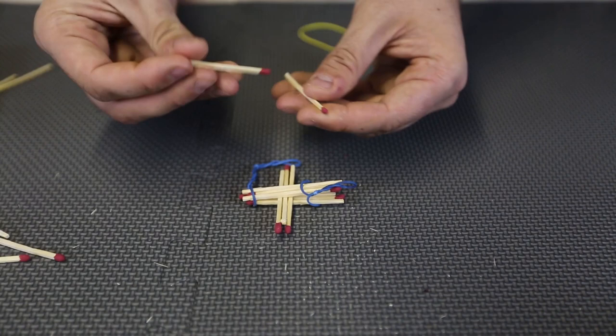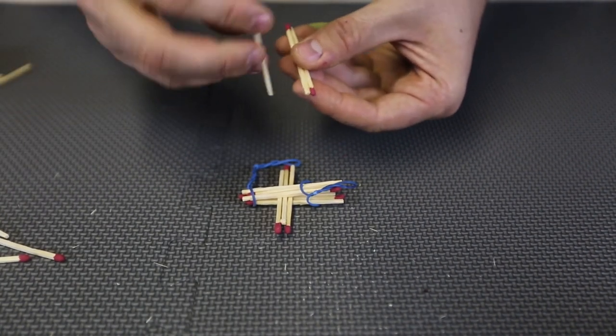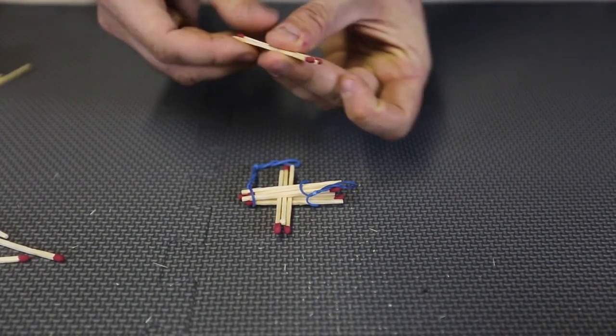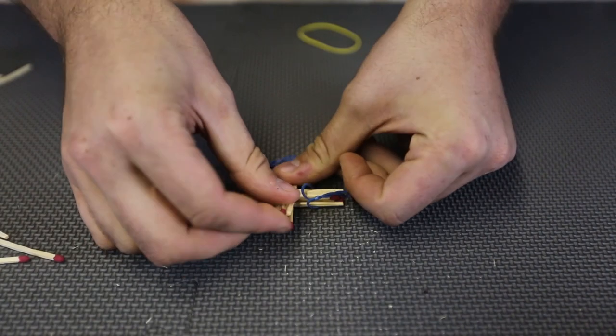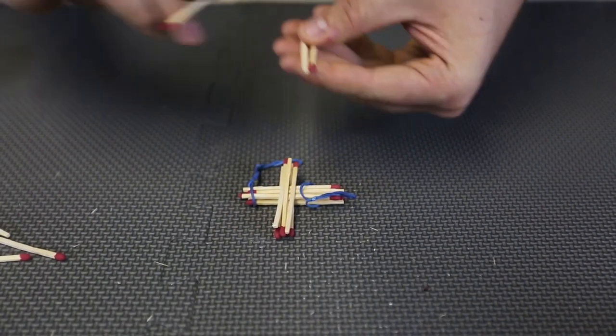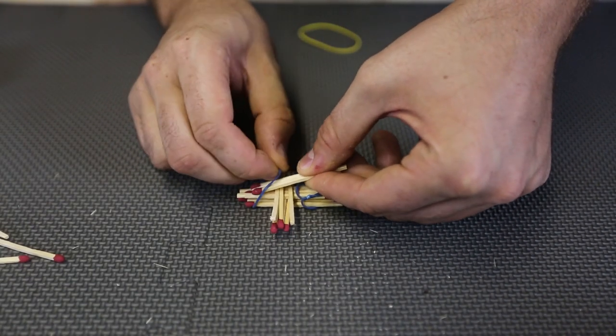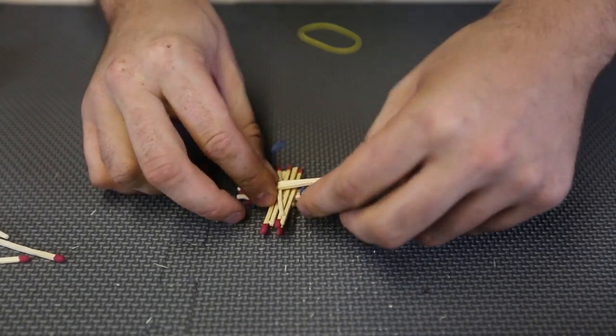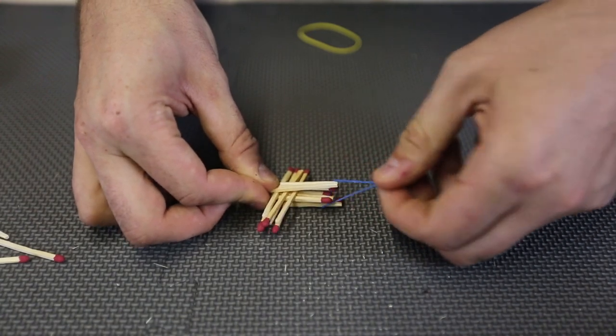You probably can already guess that I'm gonna get three more matches and put it over this way. Boom. Just like that. Once again three more matches. Two heads on this side so this time we're gonna put two heads on this side. Put it through the rubber band.